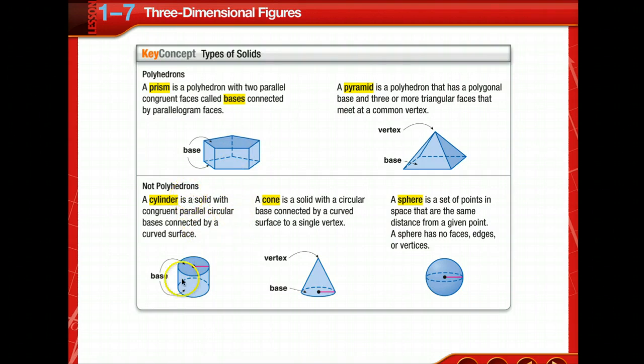These are not polyhedrons. A cylinder is not a polyhedron because it has a circular base. A cone also has a circular base and a curved surface. And then there's a sphere. That is curved all the way around. It has no faces, no edges, or vertices.